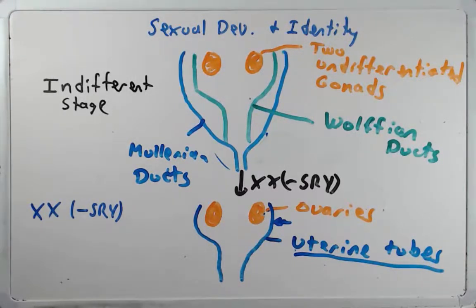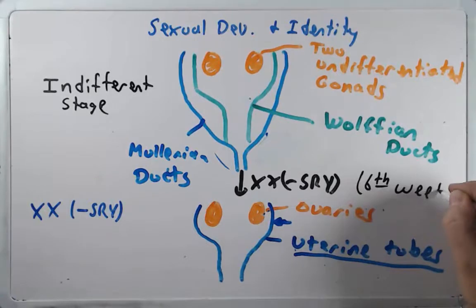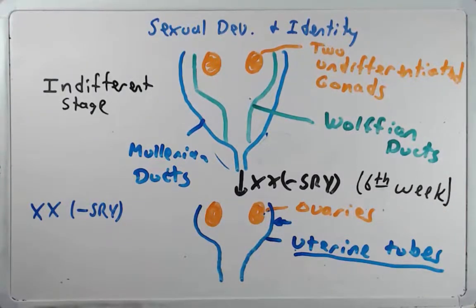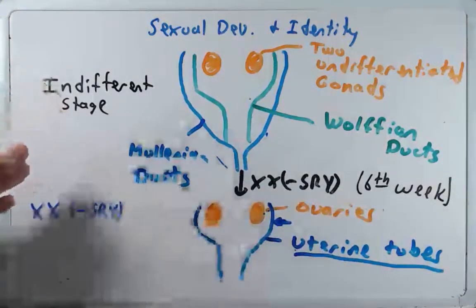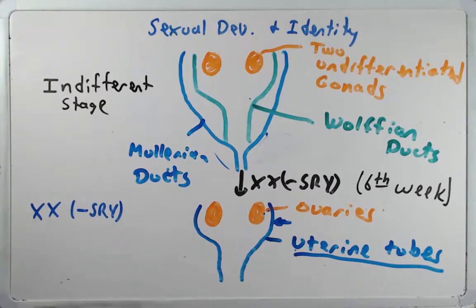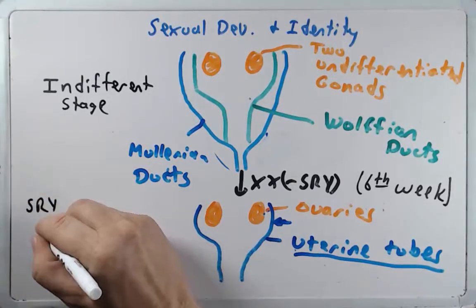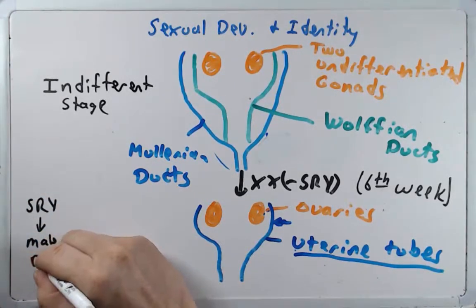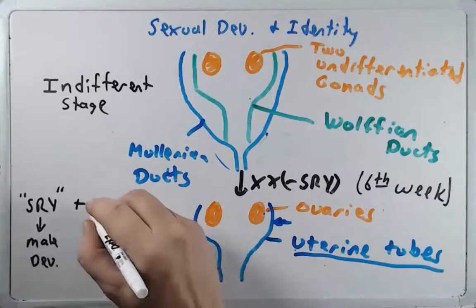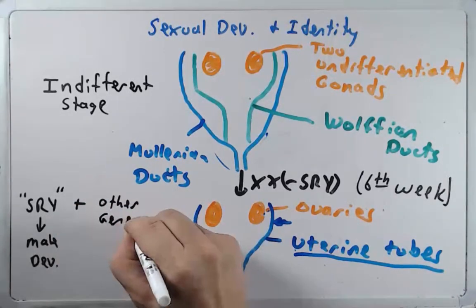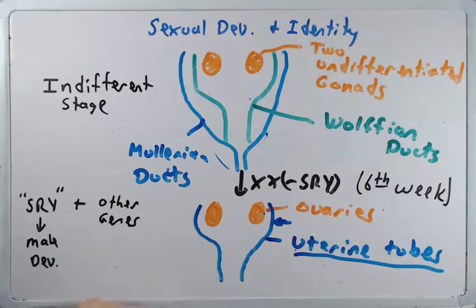The gonads remain in the undifferentiated state until the sixth week, when they begin to differentiate into ovaries or testes. Prior to the sixth week, they're still XX or XY but haven't developed sexual organs yet. The SRY gene is important in male development, but there are other genes involved as well — it's not just one gene that drives the undifferentiated gonads to become testes.